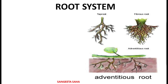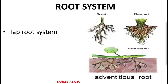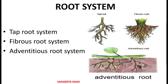Now there are three types of root system: one is tap root system, another one is fibrous root system, and the third one is adventitious root system.